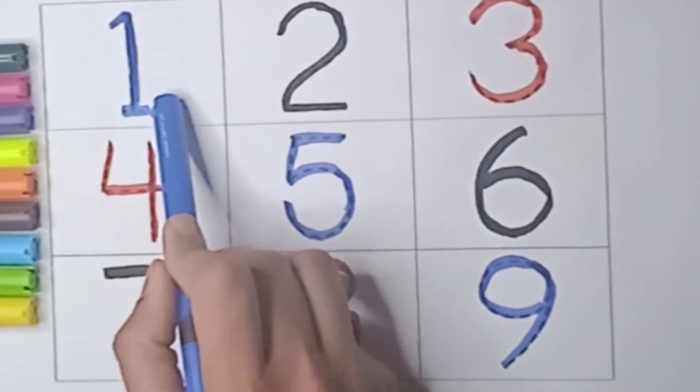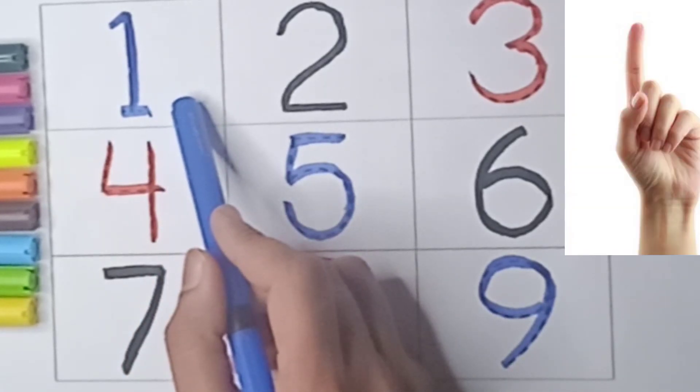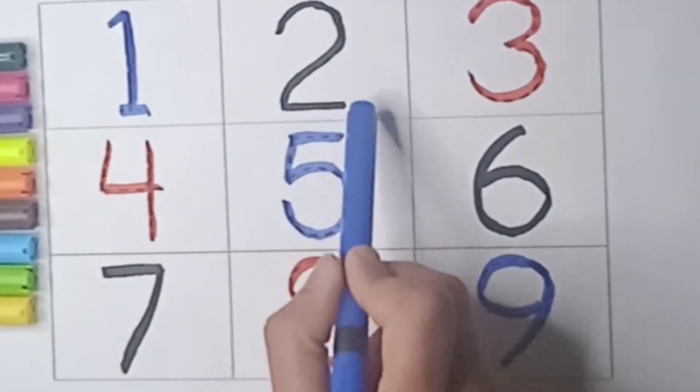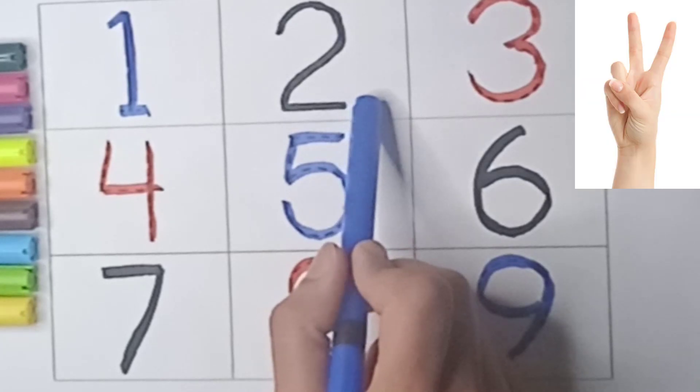1. Say 1. Show me your one finger. Say 1. 2. Count your two fingers. 1, 2.